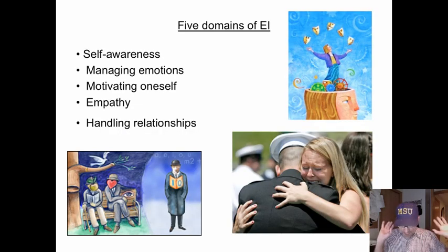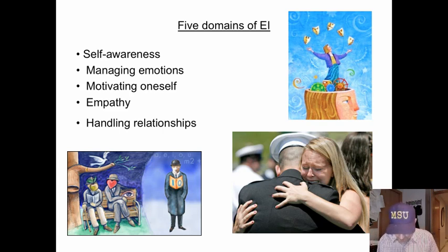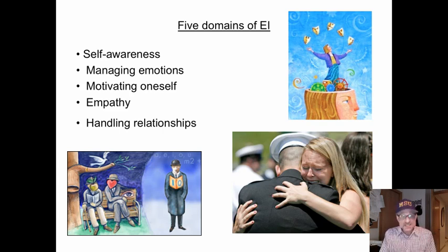There are five domains or five parts of emotional intelligence. The first is self-awareness — that means observing yourself, identifying and recognizing feelings as they happen. It's kind of like intrapersonal intelligence.